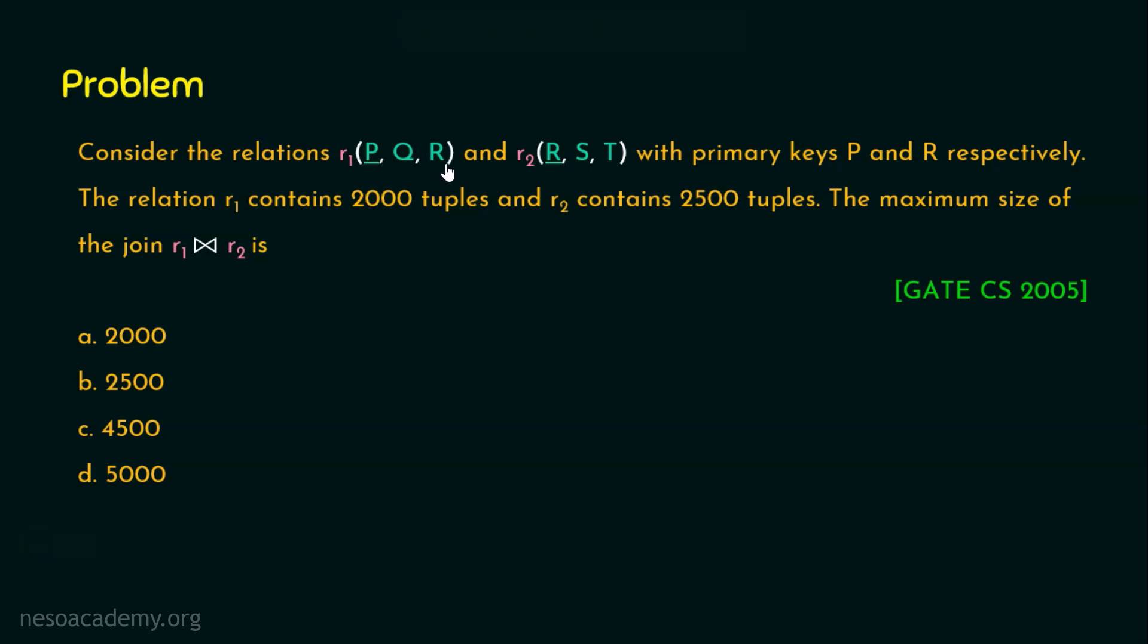The reason is, this is not a primary key attribute and this may have duplicate values or null values in R1. However, this R which has 2500 unique values and no null values will match with this exactly the maximum 2000 only we will be getting as the output. So the right answer for this question is option A, 2000.